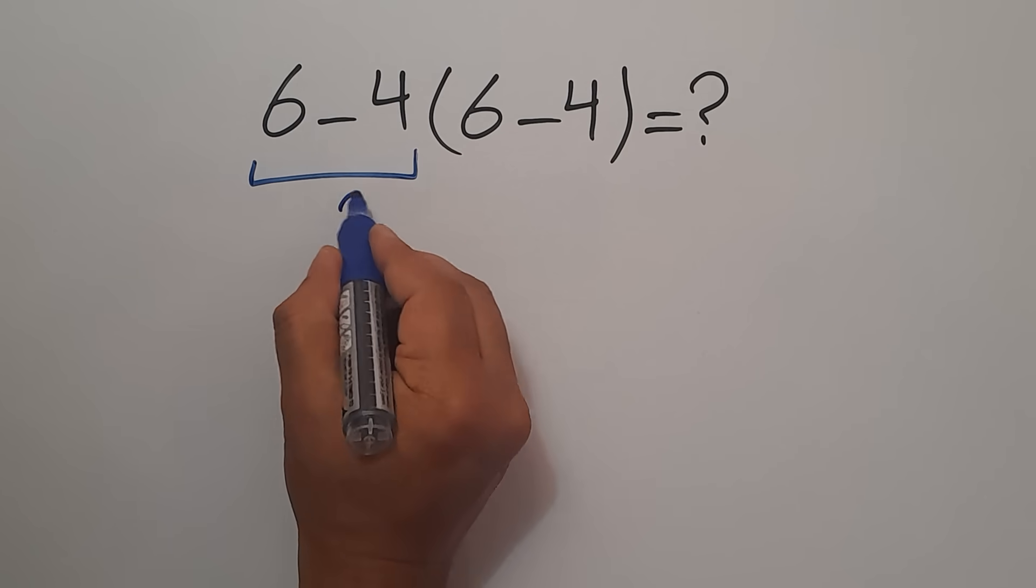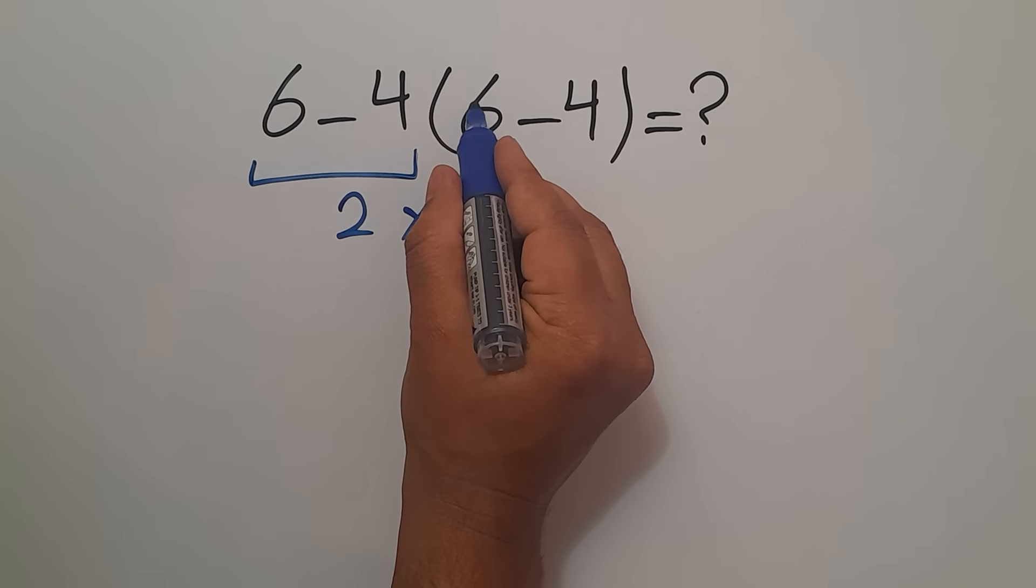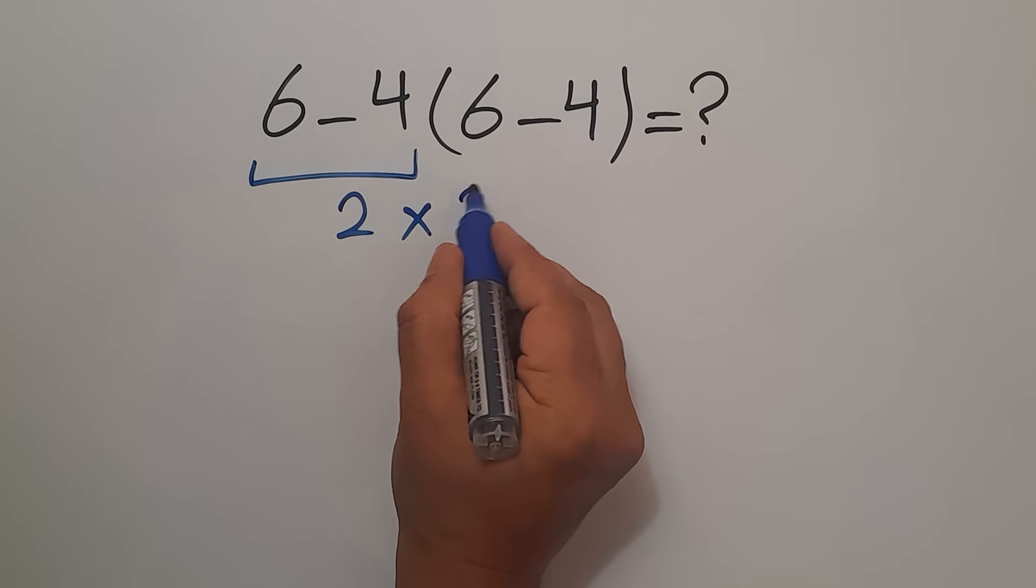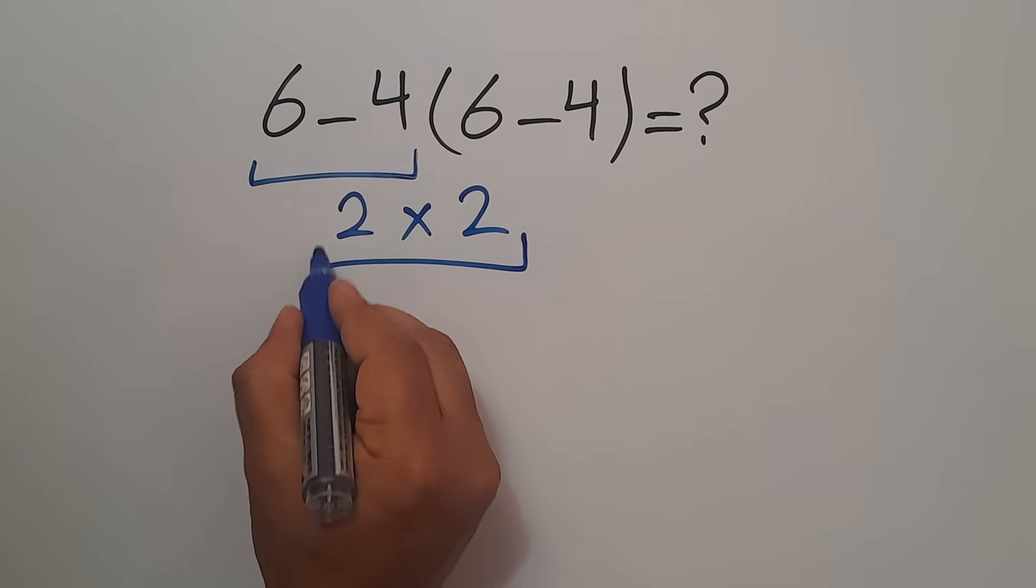6 minus 4 equals 2, and 2 times again we have here 6 minus 4 which equals 2. 2 times 2 gives us 4.